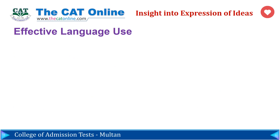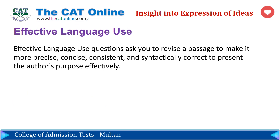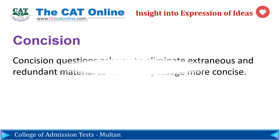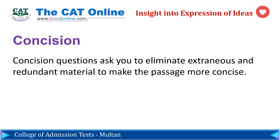Effective language use questions ask you to revise a passage to make it more precise, concise, consistent, and syntactically correct to present the author's purpose effectively. Precision questions ask you if a word or phrase is the best choice given the passage — oftentimes you will be asked if a word or phrase is too vague, and then be asked to select a more focused word or phrase to enhance the section. Concision questions ask you to eliminate extraneous and redundant material to make the passage more concise.